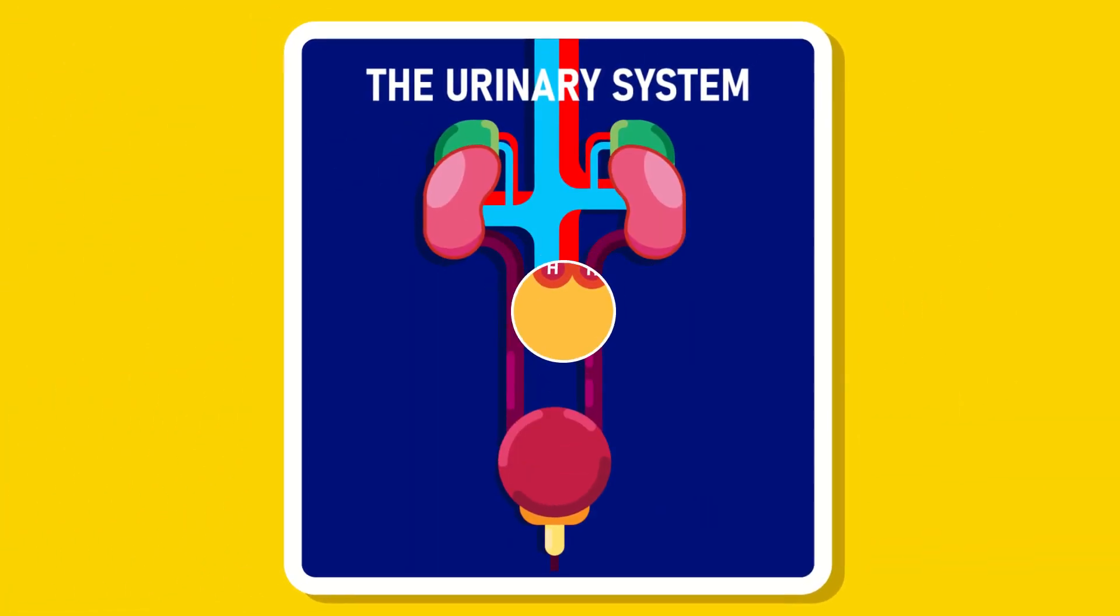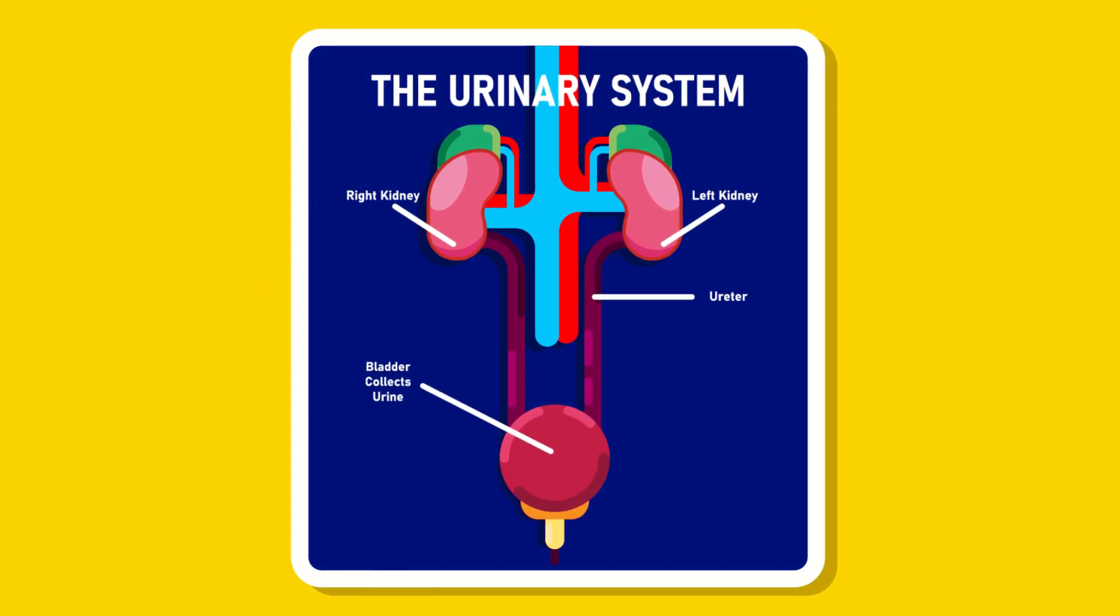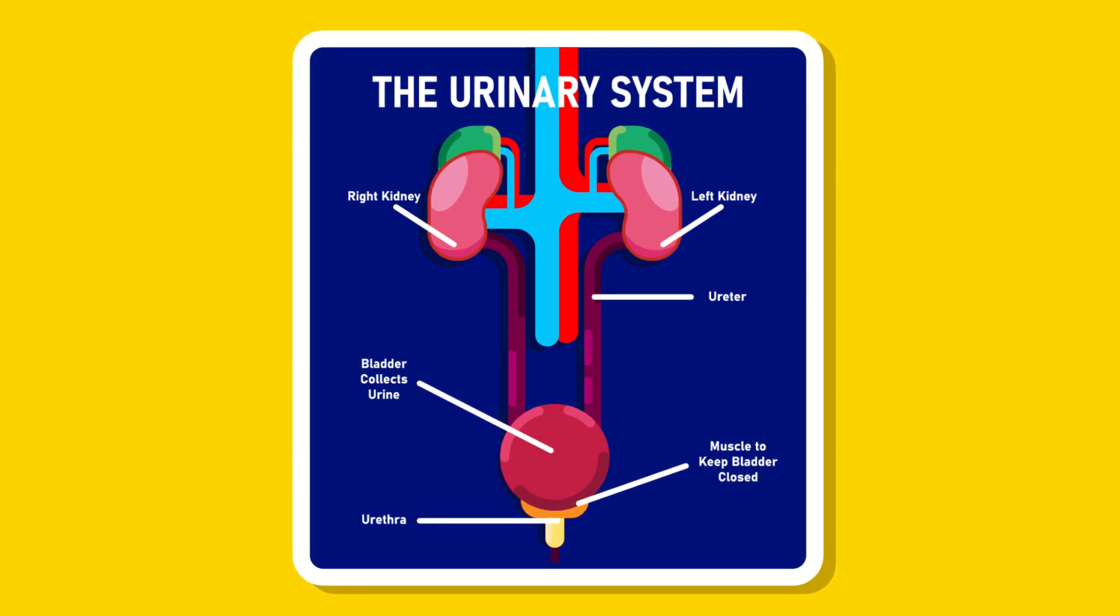The Urinary System. The human urinary system consists of the kidney, ureta, urinary bladder, sphincter muscle, and the urethra.